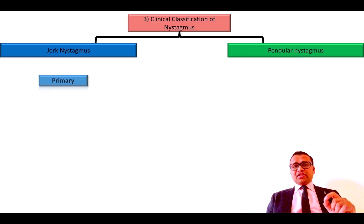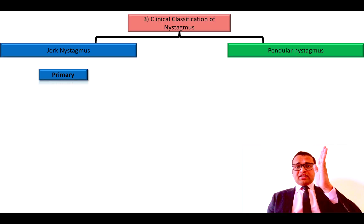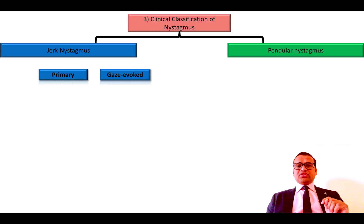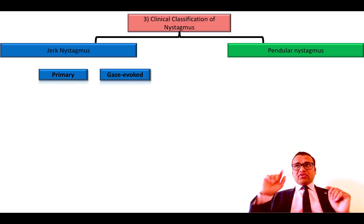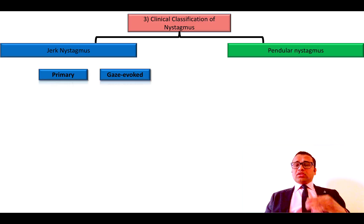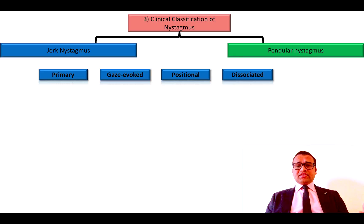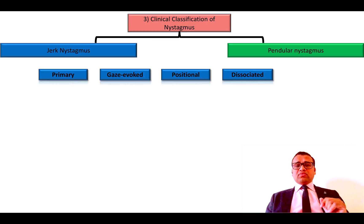Jerk nystagmus is further divided into nystagmus seen on primary gaze — that is, looking straight ahead. The second is gaze evoked, the nystagmus which is evoked by gaze in right, left, up, or down. The third variety is positional, that is an induced variety of nystagmus provoked by certain positions like the Dix-Hallpike maneuver. The next type is dissociated nystagmus, where there is dissociation between the nystagmus of the right and left eye, and other varieties.